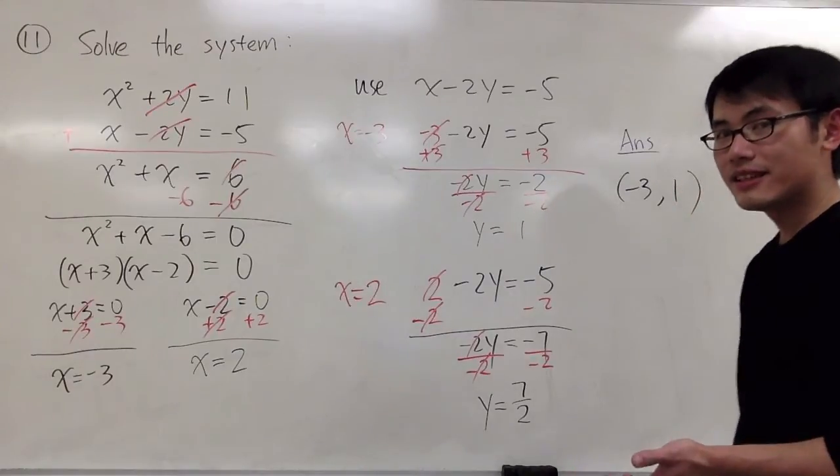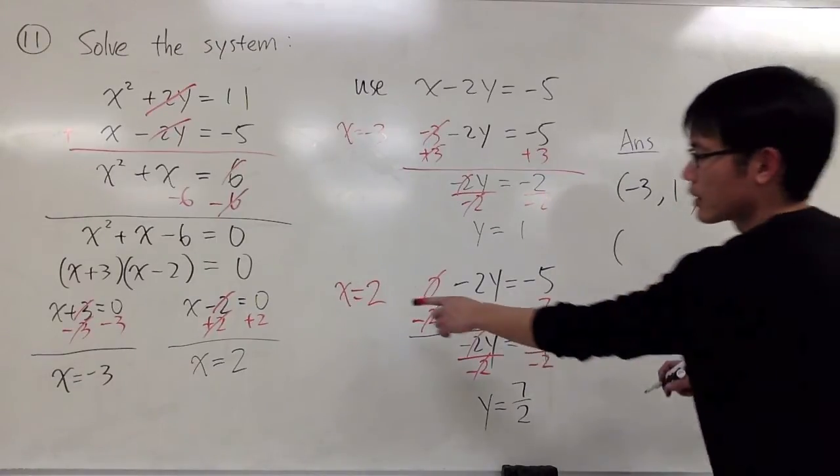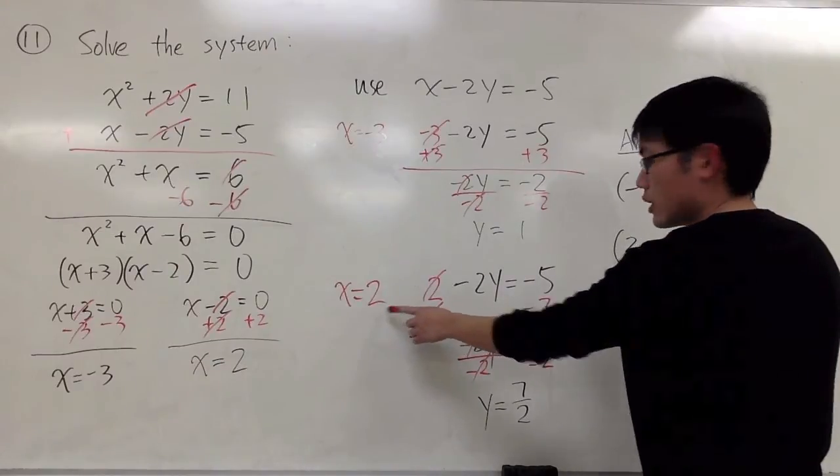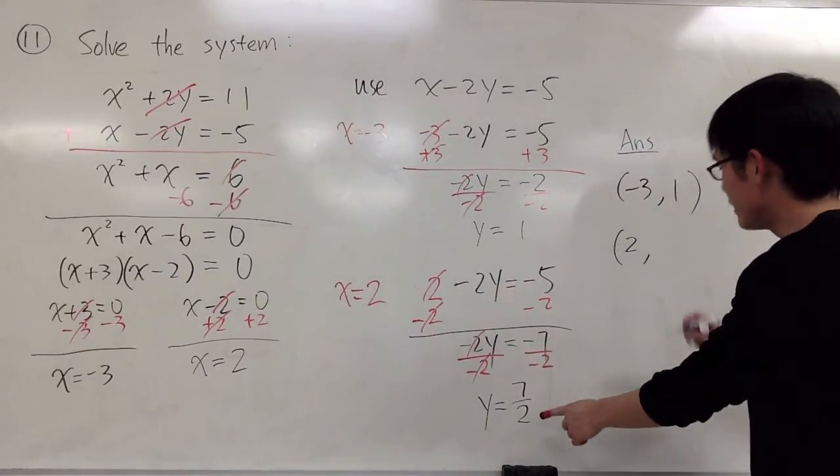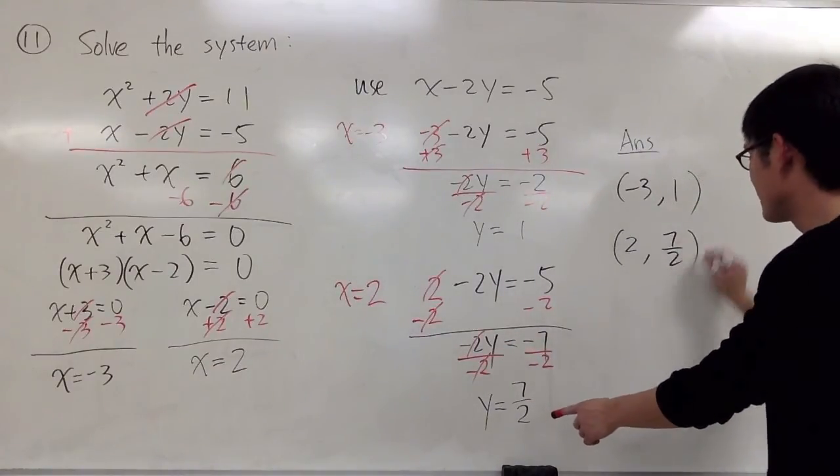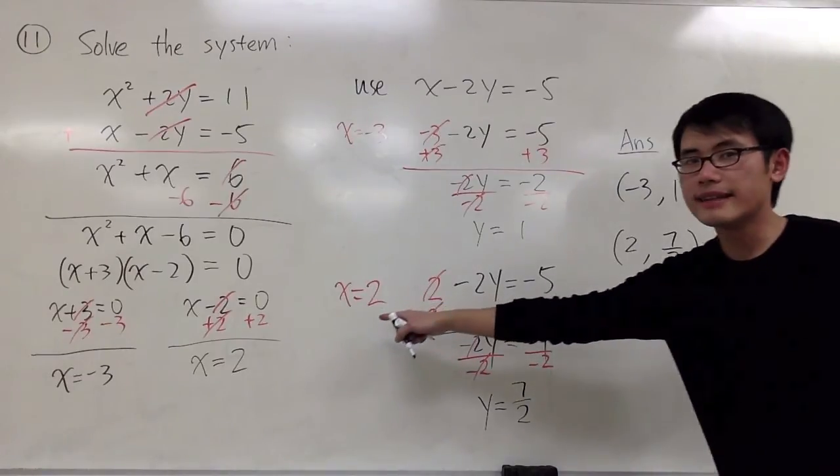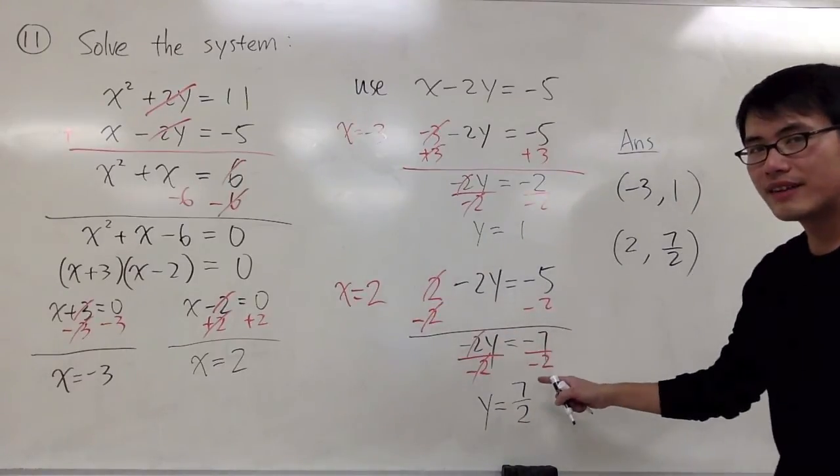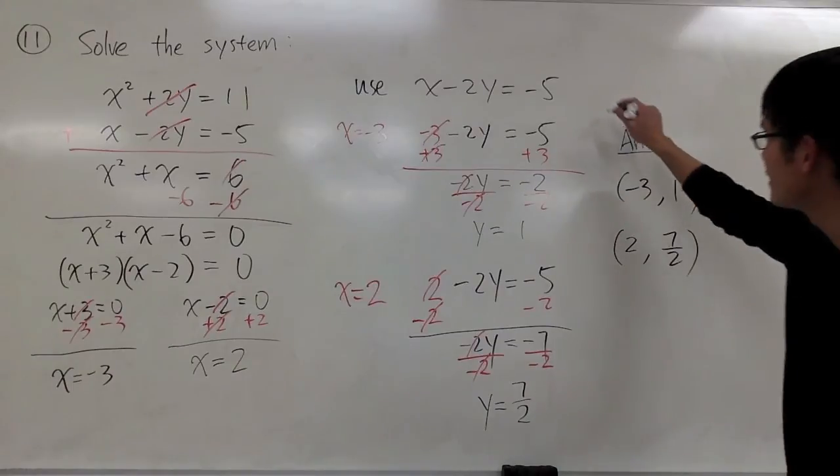So the second answer will be when x = 2, y will be 7 and a half. x = 2 and y is 7 and a half.